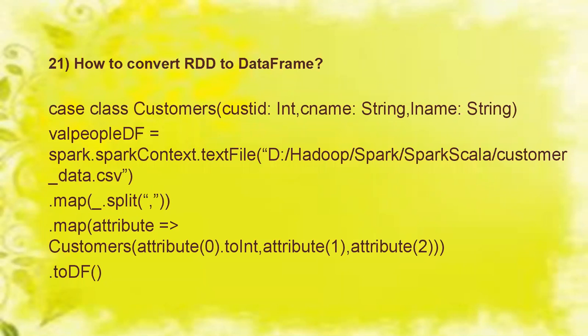Here I have provided an example using a case class — the Customer class — with customer ID as integer type and customer name and last name as string type. I am creating a DataFrame where I read a CSV file using SparkContext's textFile, then applying a split followed by a map transformation on top of all the records.